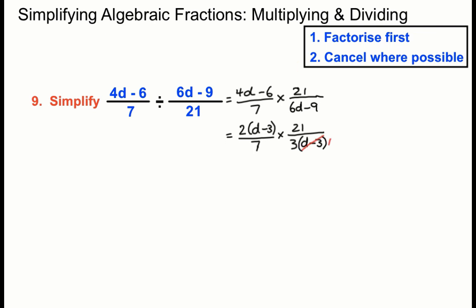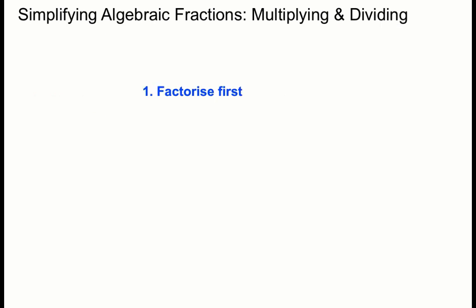It's nice when that happens. d minus 3 can go into the bottom once and into the top once. 7 can go into the bottom once and into 21 3 times. That bottom 3 can now cancel into the top 3 once. And we're left with 2 times 1 times 1 on the top and 1 times 1 times 1 on the bottom. For simplifying algebraic fractions we'll factorise first or look to and then see if we can cancel where possible.